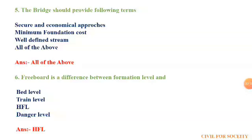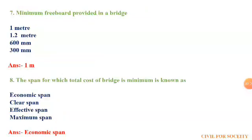The sixth question: freeboard is the difference between formation level and blank. The options are bed level, train level, HFL, and danger level. The answer is HFL. The seventh question: the minimum freeboard provided in a bridge. The first option is 1 meter, second is 1.2 meter, third is 16 millimeter, fourth is 300 millimeter. The answer is 1 meter.